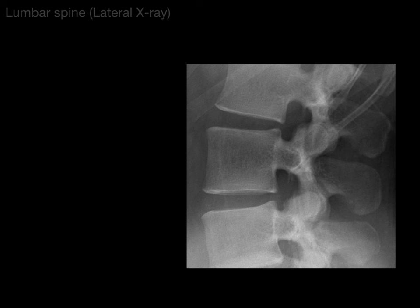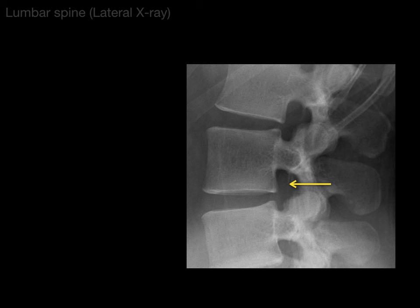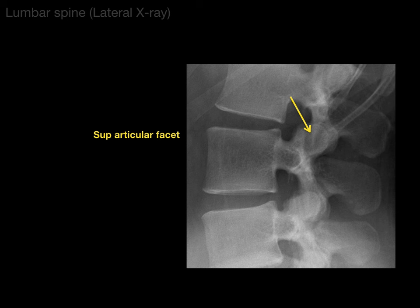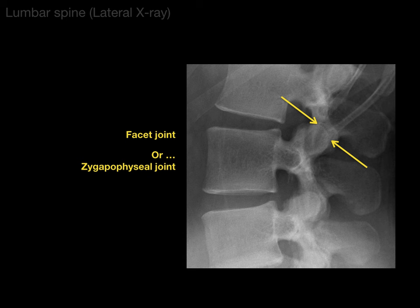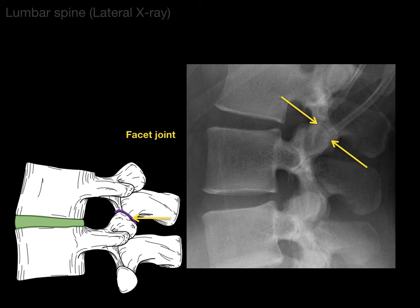Next is the spinous process — the nose of a moose. What about this coming off the side? That is the lamina, plural laminae. What about this structure attaching the vertebral body to the vertebral arch? That's the pedicle. That space between adjacent pedicles is the intervertebral foramen or neural foramen — between the supra and infra adjacent pedicles. There's a superior articular facet, and its associated inferior articular facet with the facet joint — or zygapophyseal joint — in between. It allows this kind of flexion and extension motion.